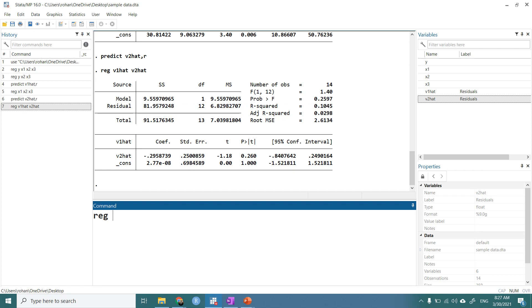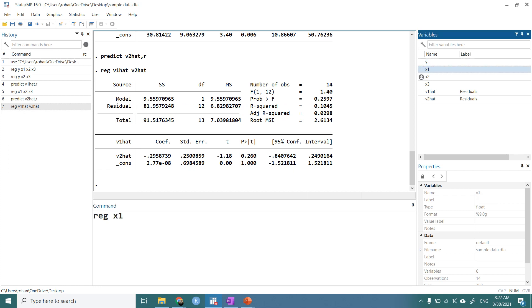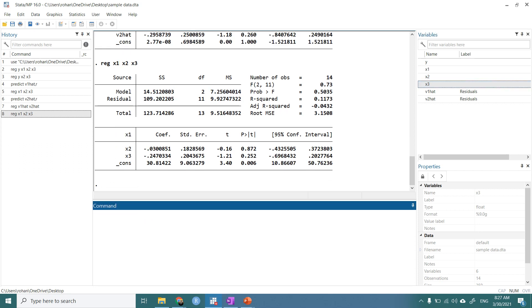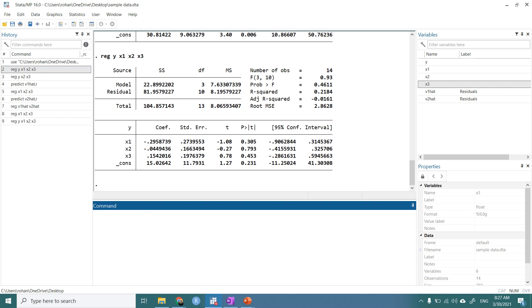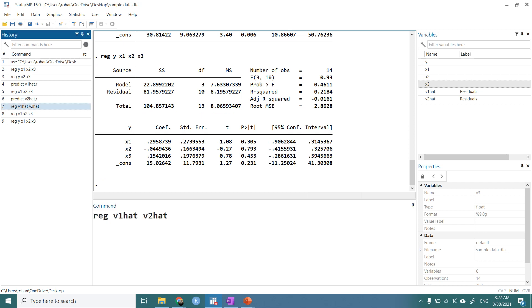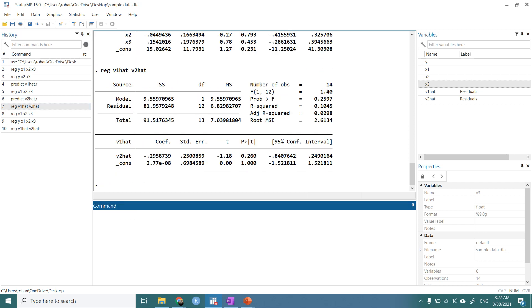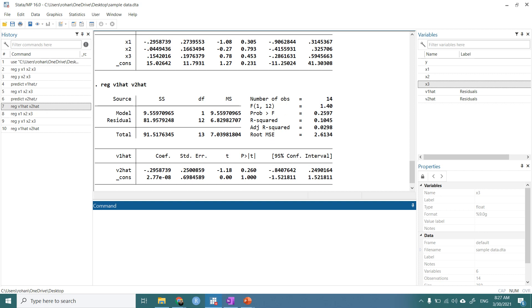Let's do it again: regression y, x1, x2, and x3. Let's have this equation, and let's have the final equation of v1 on v2. It's minus 2.958739, and the coefficient of x1 is minus 2.958739.